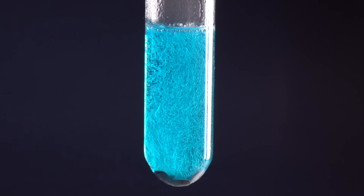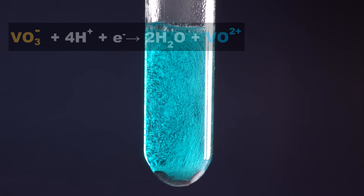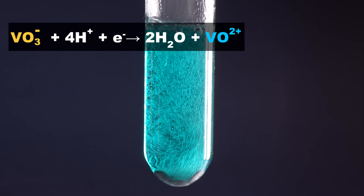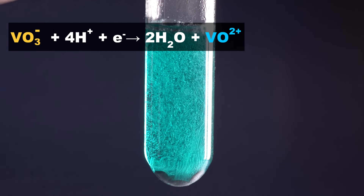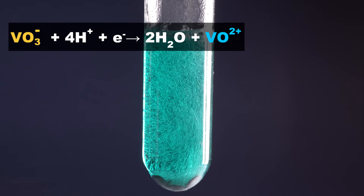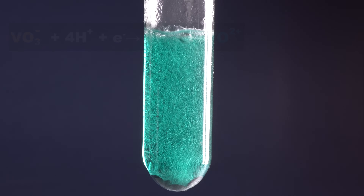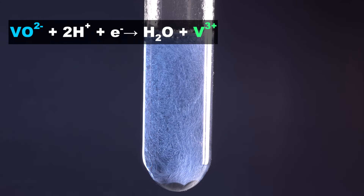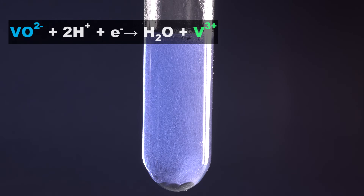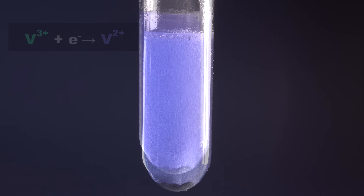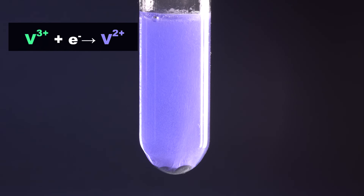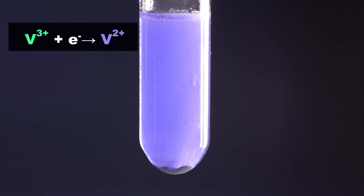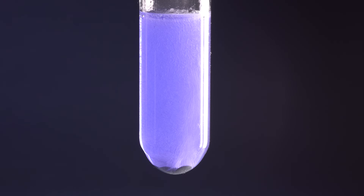Over time, the color of the solution changed to blue, due to hydrogen restoring vanadium to oxidation state +4. Further, the solution gradually acquires a green color, due to the addition of one more electron by the vanadium atom. At the end, after some time, the solution becomes violet, since vanadium has taken all the electrons from the atomic hydrogen, while restoring itself to bivalent vanadium.